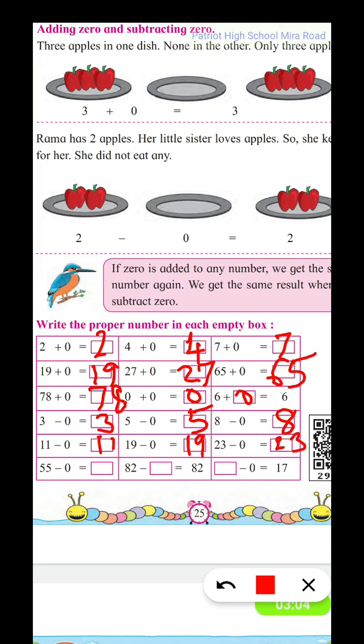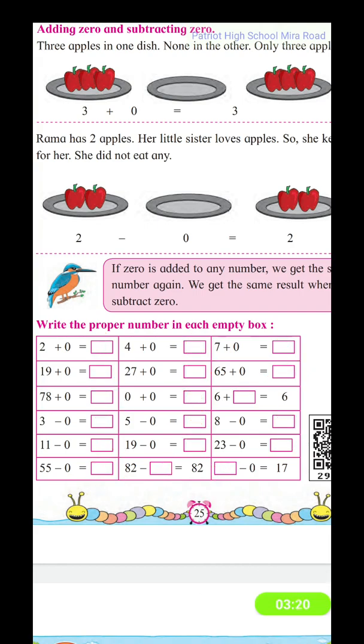11 minus zero gives 11. 19 minus zero gives 19. 23 minus zero gives 23. 55 minus zero gives 55. 82 minus zero gives 82. 17 minus zero gives 17.